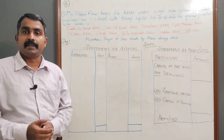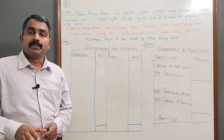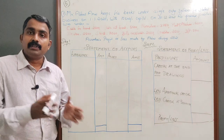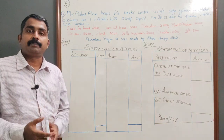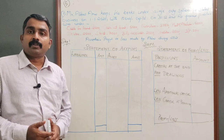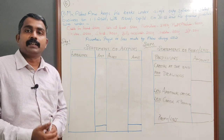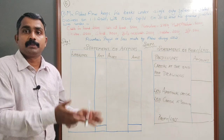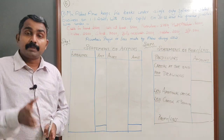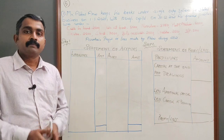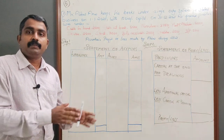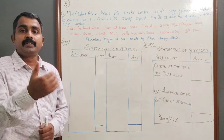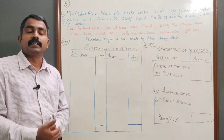Single entry refers to an incomplete system of accounting. Whenever an organization follows this system, we can't find out the profit or loss exactly. In order to find out the profit or loss of an organization following single entry system, generally two methods are there: the statement of affairs method and the conversion method. In this class we will discuss how to prepare a statement of affairs and thereby find out the profit or loss.